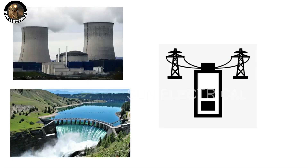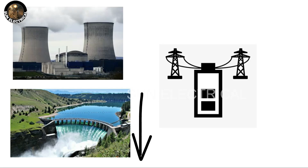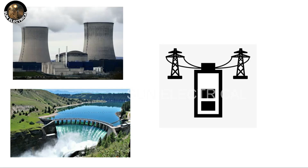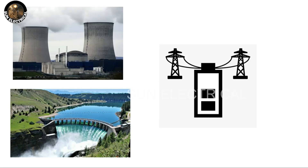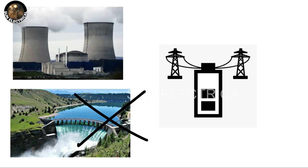If you connect this power plant to the grid, it is high efficiency. You can connect these two power plants with the grid and connect with the load. The normal load will be handled by the thermal power plant, and the hydroelectric power plant can be switched off. When you reach peak load, you can connect the hydroelectric power plant.